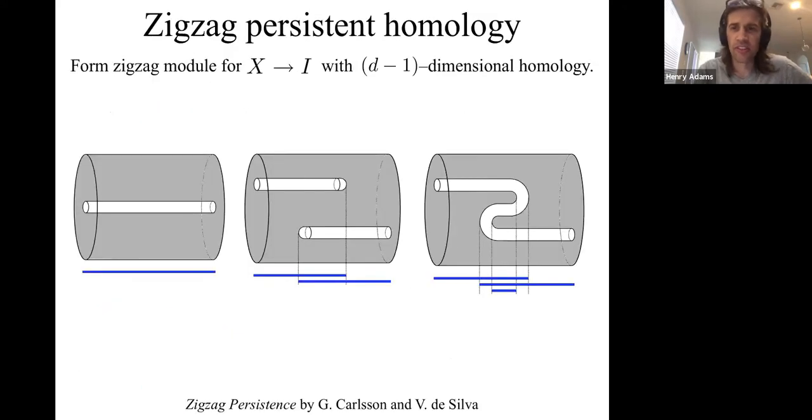What is zigzag persistence? In zigzag persistence, you track holes, just like you do in persistent homology. But you track holes when the space is allowed to get larger or smaller. In persistent homology, the space only ever gets larger, but in zigzag persistence, the space can get larger or smaller. Think of the spaces as slices that, as time changes, can get larger or smaller. I'll make that more precise.